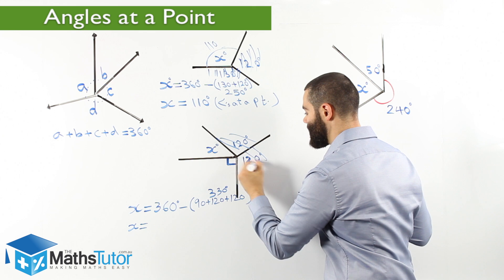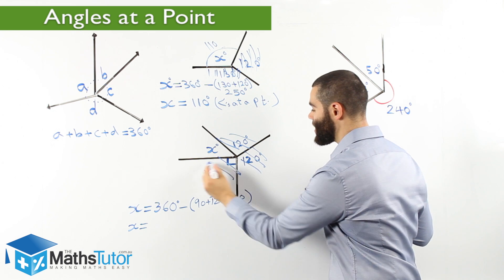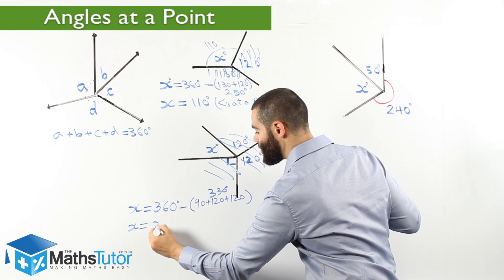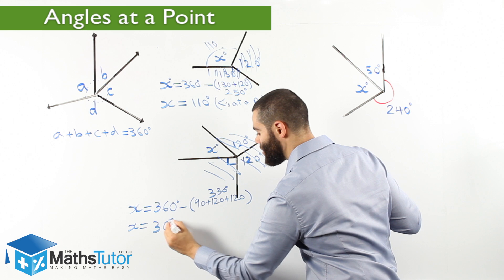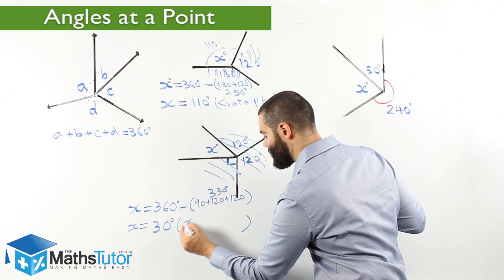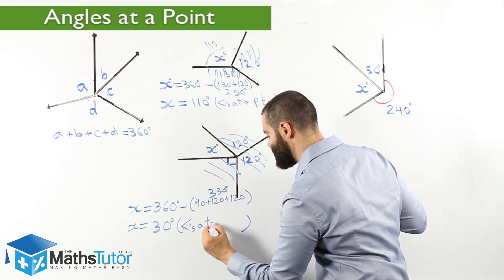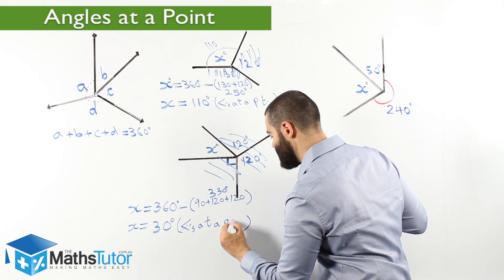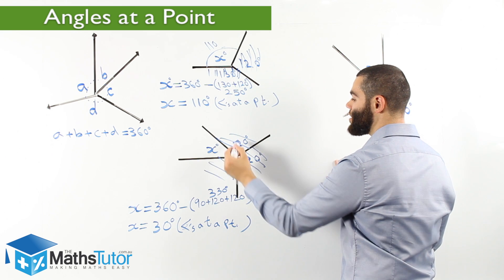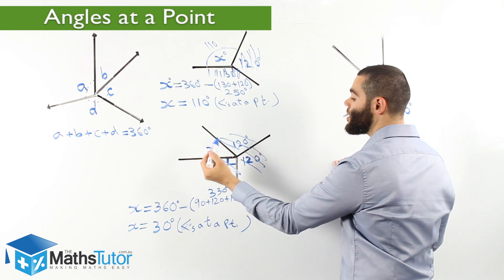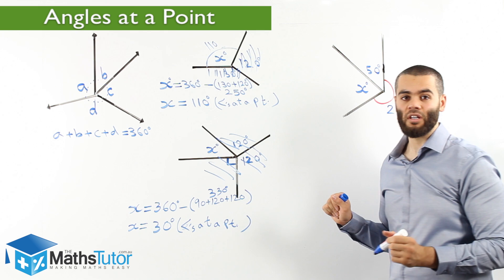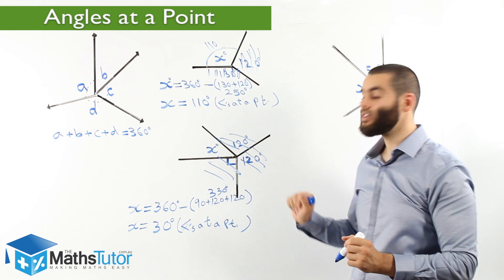We're going to take away these altogether — 330 degrees. So 360 take away 330. X is going to be 30 degrees. Angles at a point is our reason. These are the four angles, they all meet at a point. Take away 120, take away another 120, take away 90. 360 take away all three of those angles — we're left with 30 degrees. Very straightforward, as you can see.